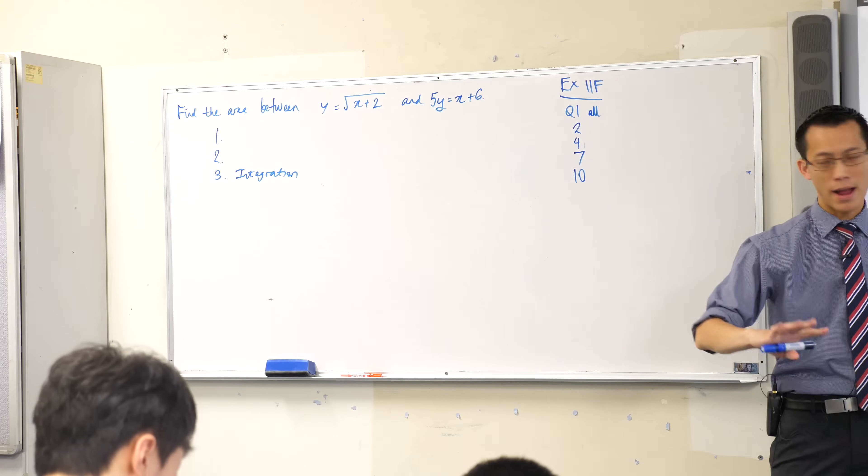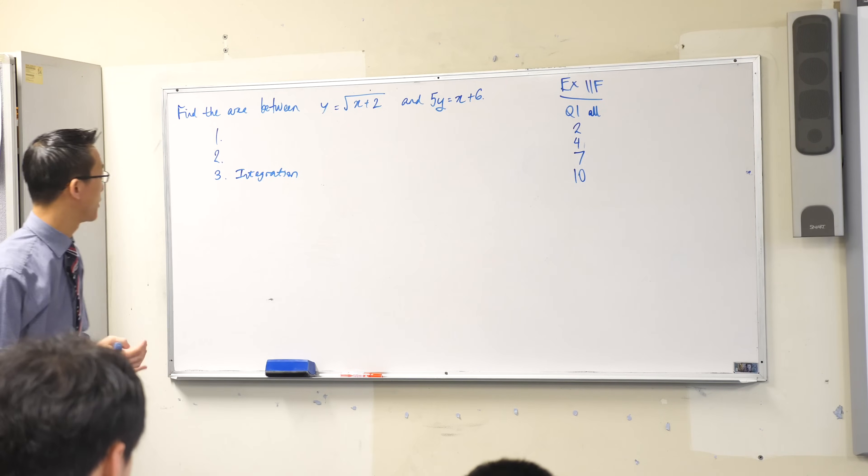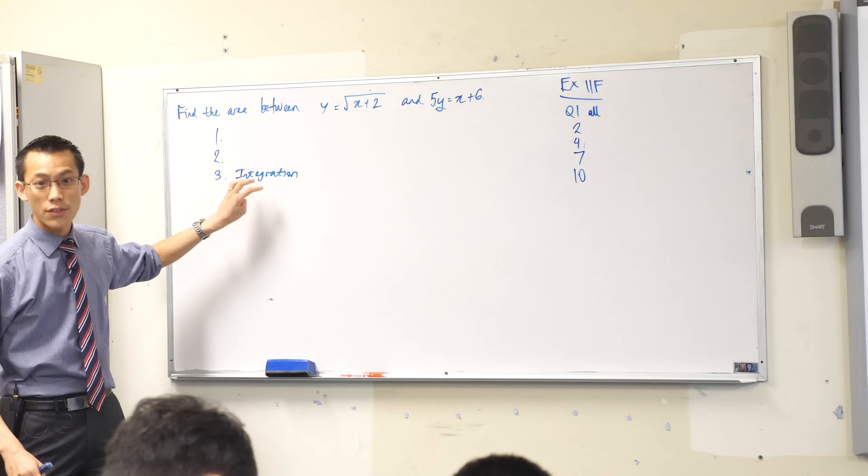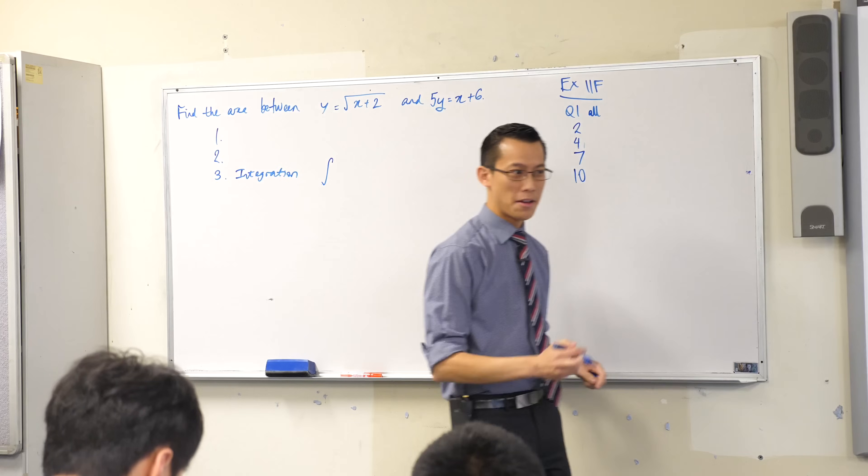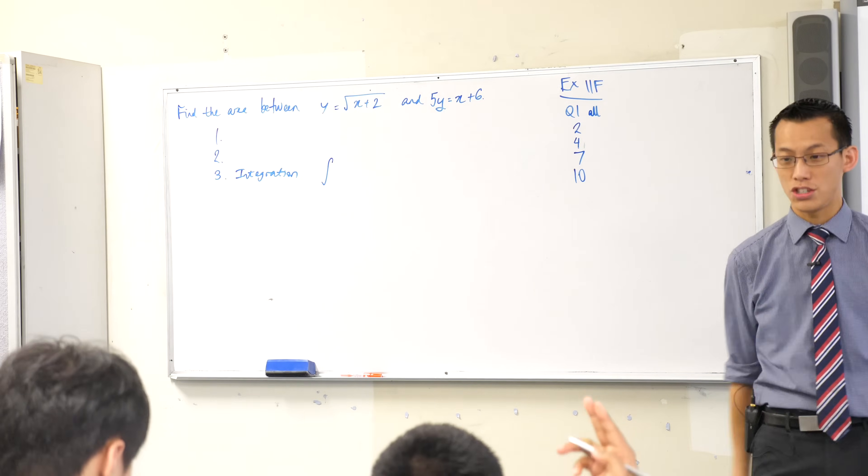But let's try and give you a bit of structure around this so that you have a pattern in your head so your brain can go to it quickly. What are the two things you're going to need before you even get to integration, before you can write that beloved squiggly integral sign? There are at least two things you need to know. Anyone want to throw in a suggestion?